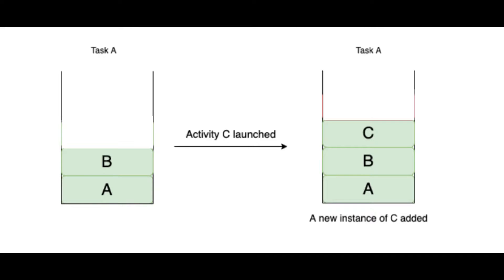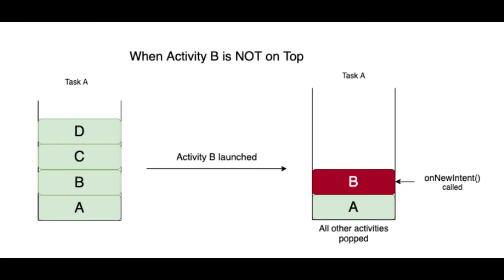For example, suppose we have four activities: Activity A, B, C, and D. We launch Activity C from Activity B. As Activity C is not in the task already, it will be added at the top. Now suppose we open Activity B from Activity D. As Activity B is already present in the task, all instances added after Activity B will be removed and Activity B will point to the top of the task, since in Single Task launch mode there is just one instance of the activity.